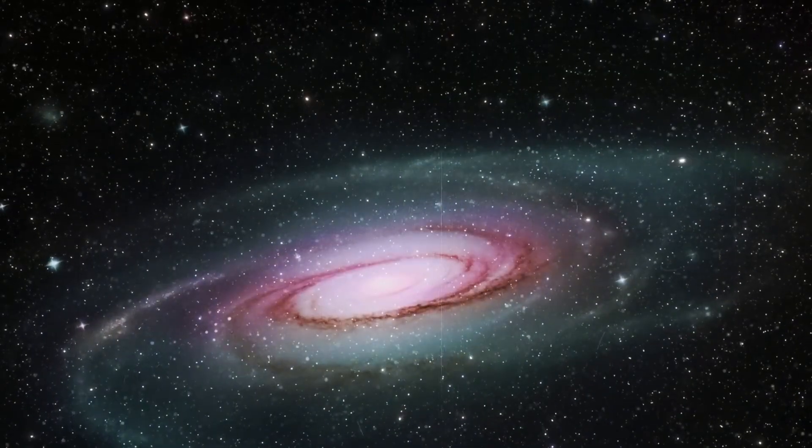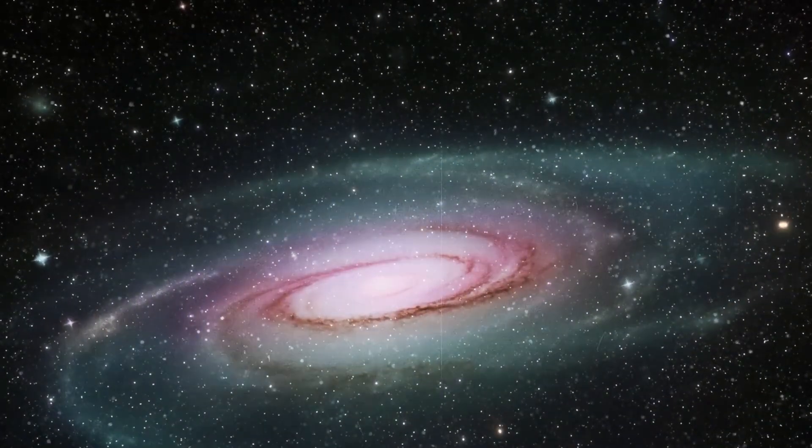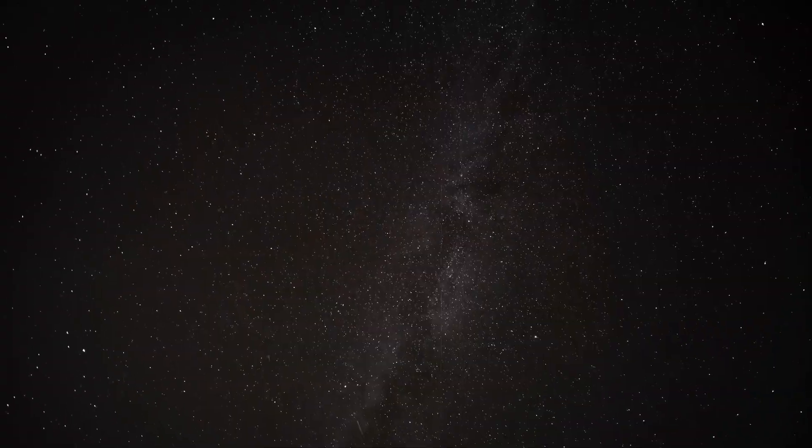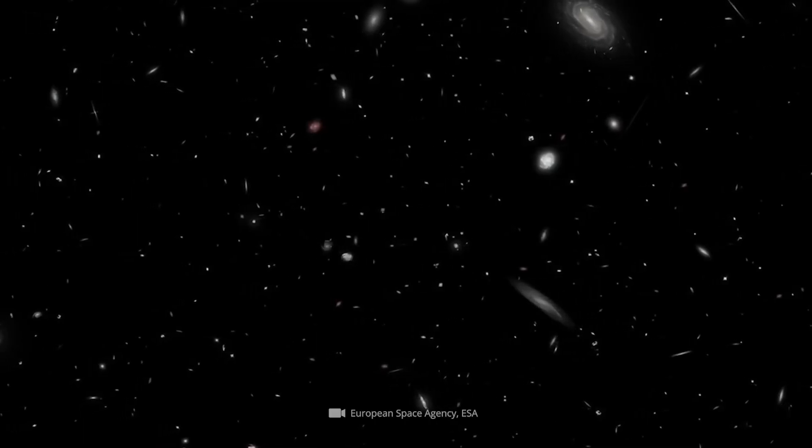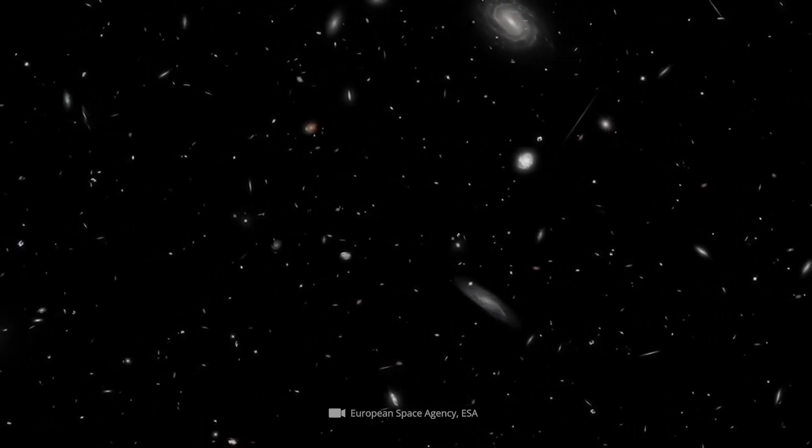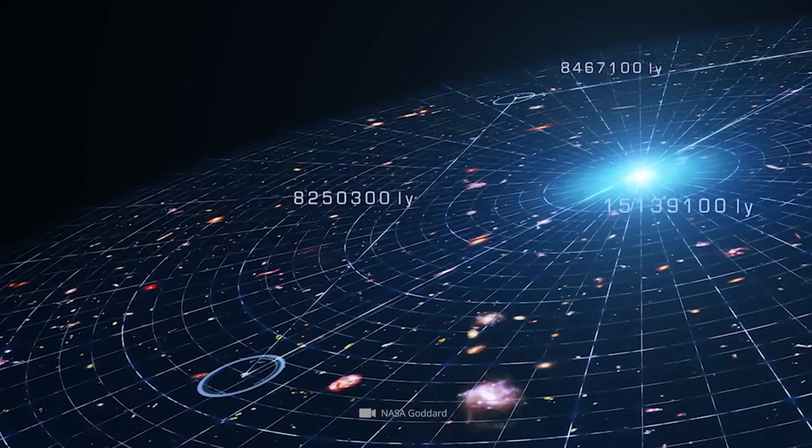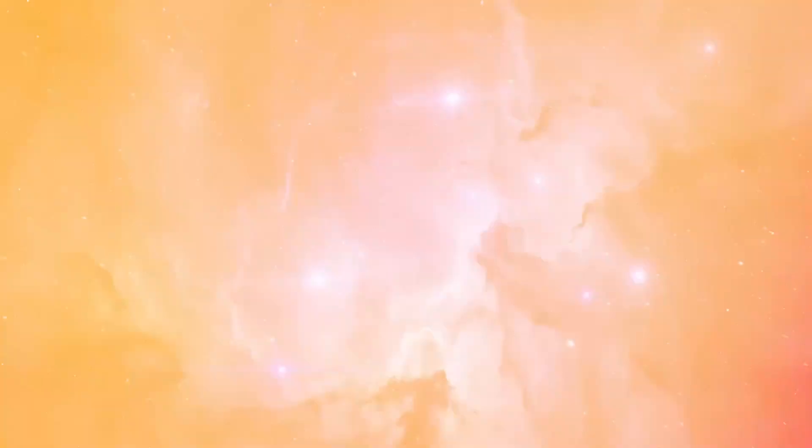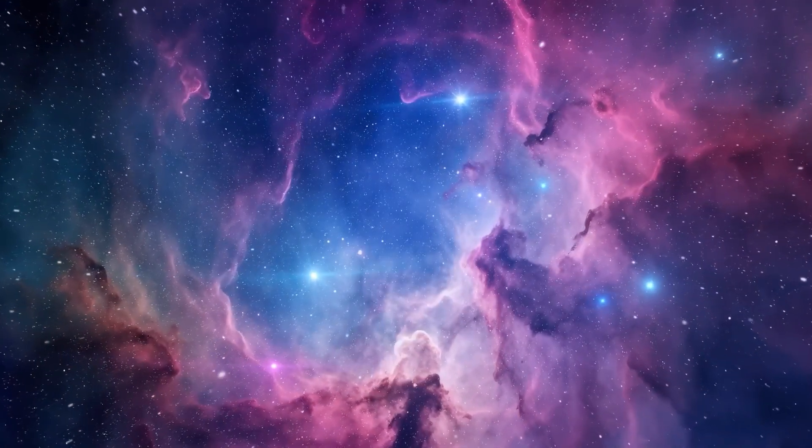Although Edwin Hubble had observed that nearly all galaxies were moving away from us, Albert Einstein held so tightly to his vision of a static, unchanging universe that he added the cosmological constant to his field equations. Looking back, Einstein later admitted his mistake, calling it the greatest blunder of his life.